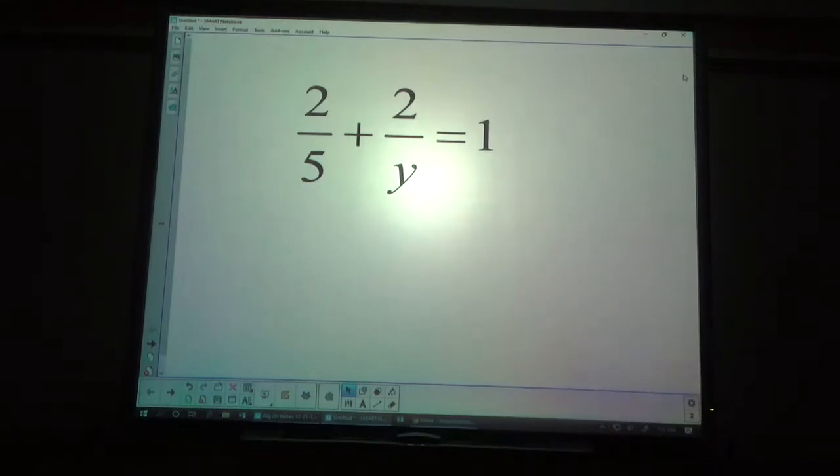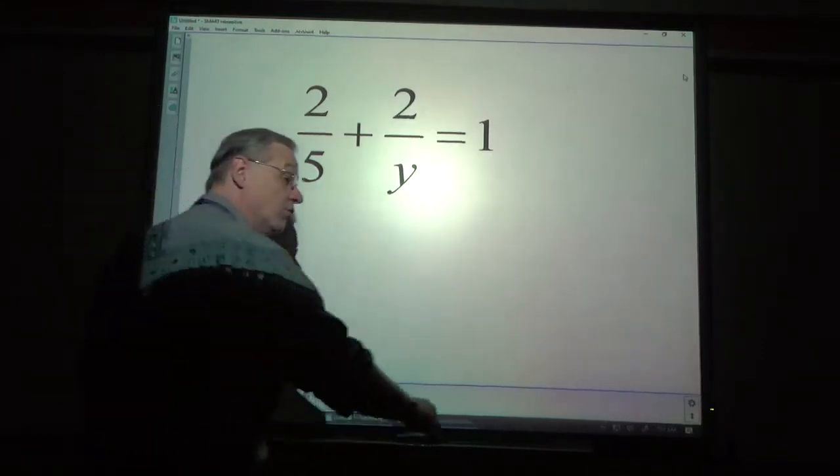The easiest way to get rid of fractions is to find the common denominator and multiply everything, and I mean everything, on both sides by the common denominator over 1.